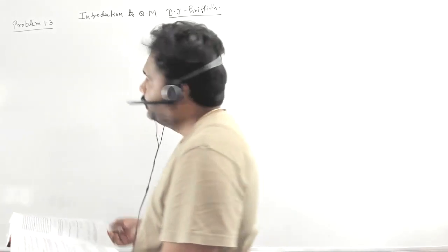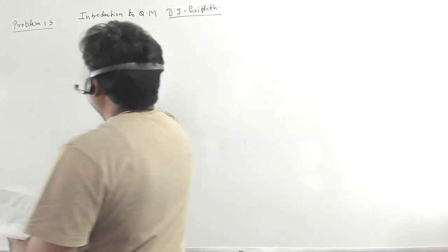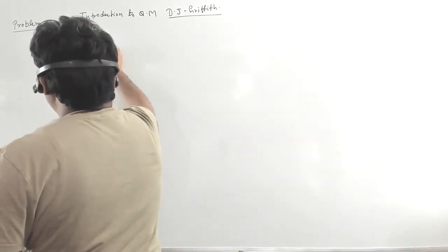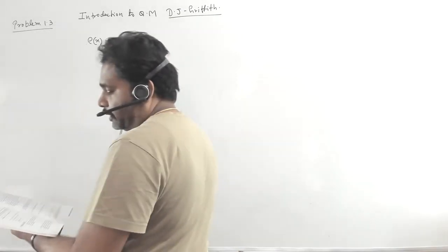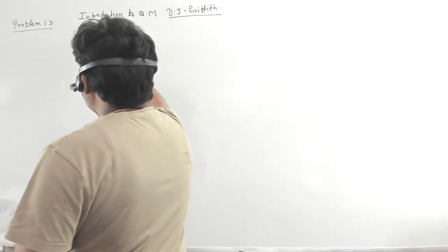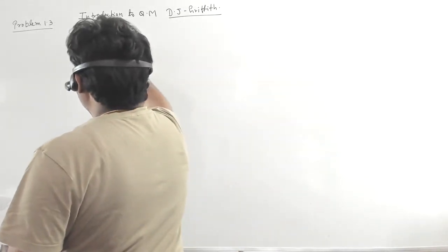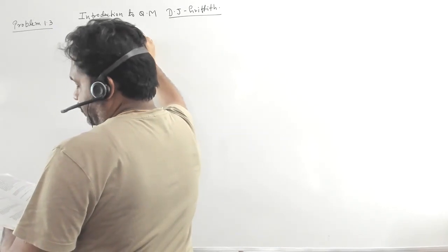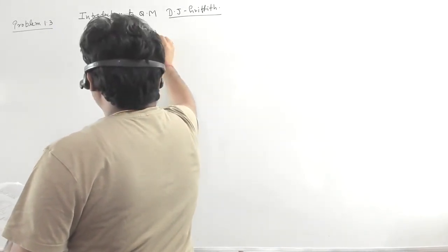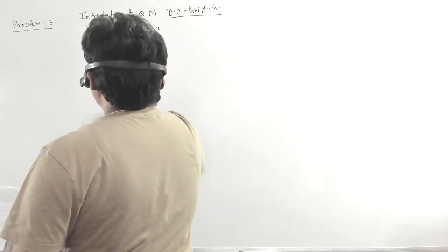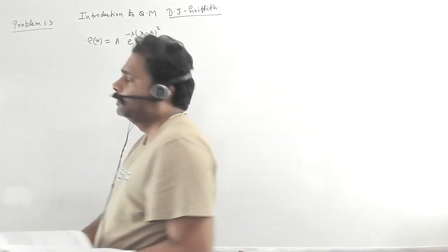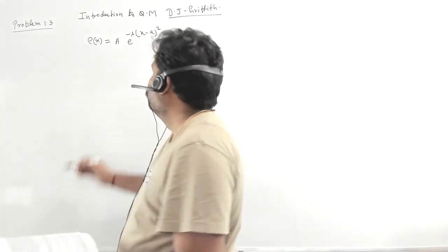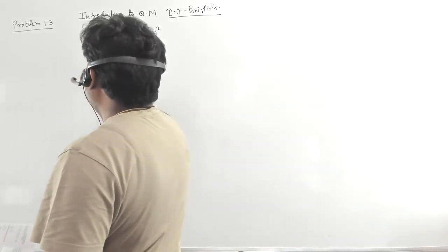So what is given in this problem? It is given that ρ(x) is a Gaussian distribution, given by a·e to the power minus λ(x minus a) whole square. This is the distribution and we have to find the value of a.